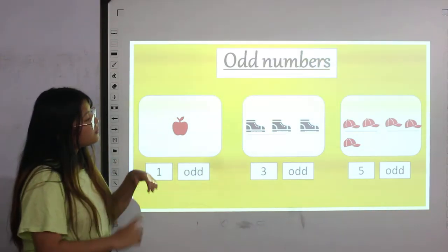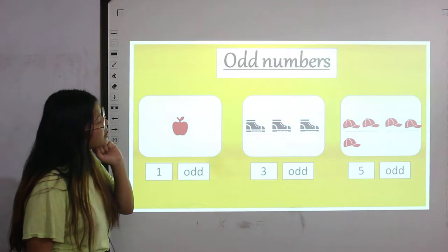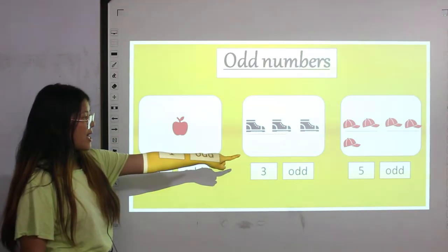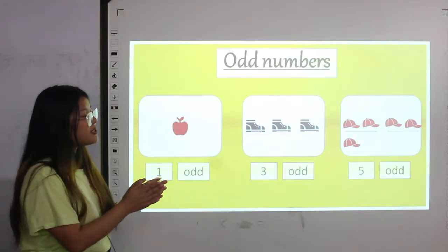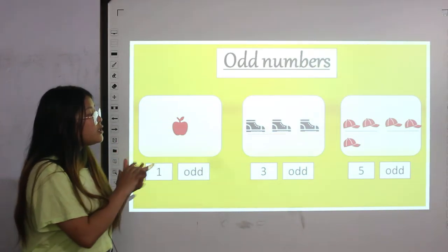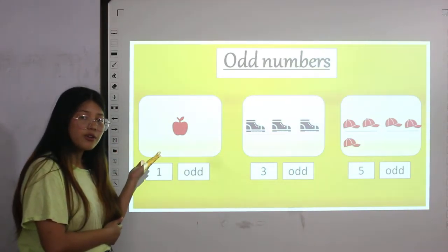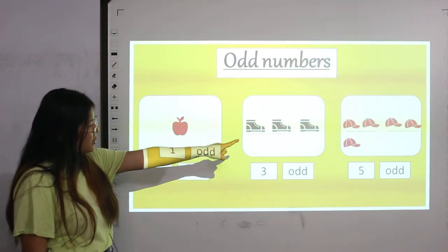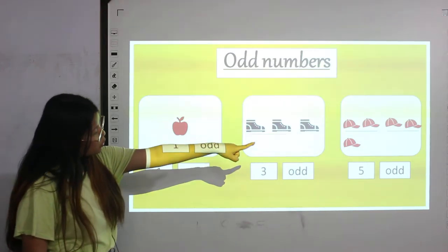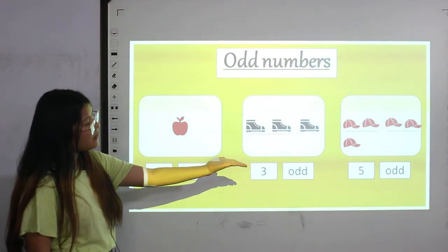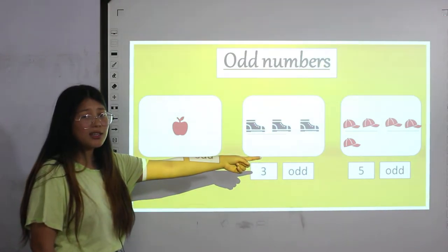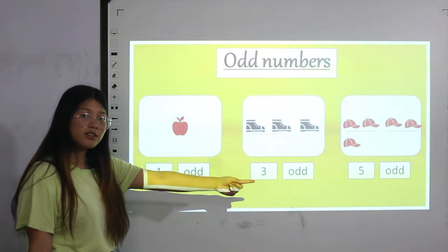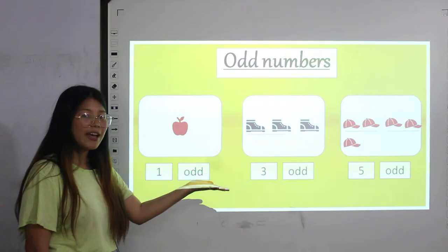Moving on to the final card. Let's count — one, two, three, four and five. There are five caps. To see if five is odd or even, we have to pair them up. The first two are in pair, those two caps are also in pair, but the last one doesn't have any pair — it's left alone. So number five is an odd number.